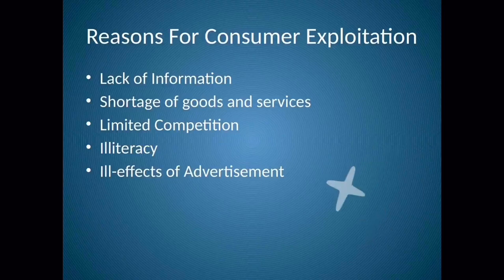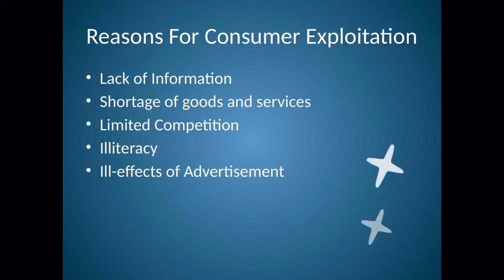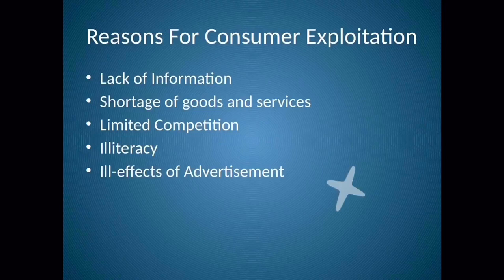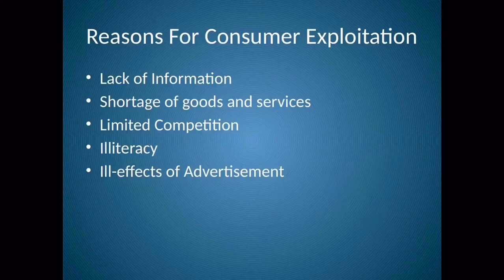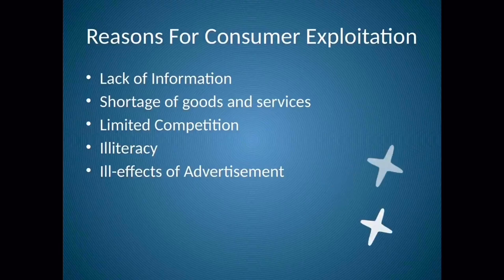Next is shortage of goods and services. Earlier a particular product did not have much variety of producers selling it, and there was always a shortage of such goods and services. So instead of complaining, consumers had to purchase whatever was provided to them. Next is limited competition. Earlier since there were not many producers and there was no competition, nobody was present to point out the loopholes in another's product. But today, since there are so many producers, they come up with the problems in competitors' products, leading to production of better quality goods to win competition and earn higher profits.